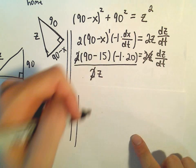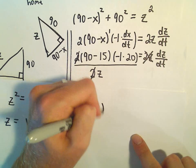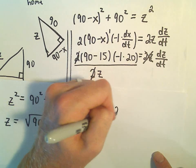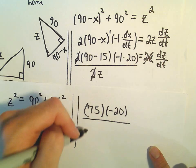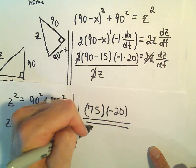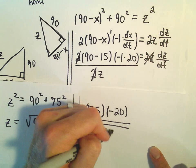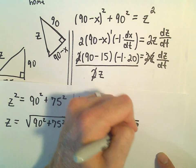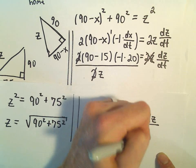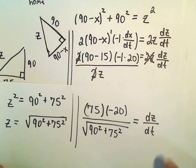So notice we can cancel out the 2s immediately. So 90 minus 15, that's just 75. We're multiplying by negative 20. And all of this is divided by 90 squared plus 75 squared. That's going to be the rate of change between the runner and the second base.